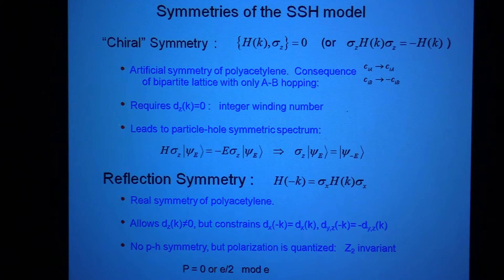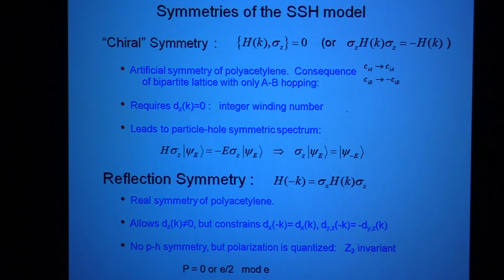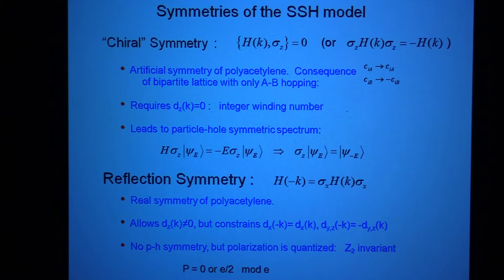It also gives you a particle-hole symmetric spectrum. What this means is that if I have some eigenstate with energy E and I apply sigma z to that eigenstate, I get a new state, and that new state is going to be an eigenstate of the Hamiltonian with energy minus E. So the eigenstates of this Hamiltonian with the chiral symmetry come in pairs with plus and minus energy.